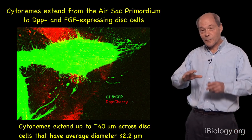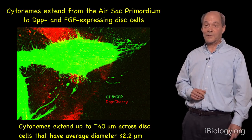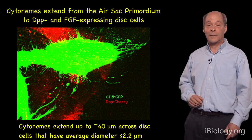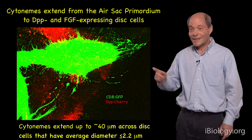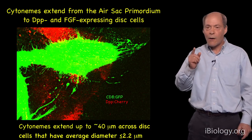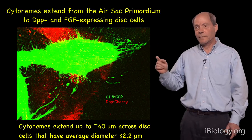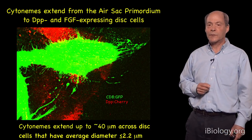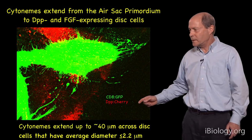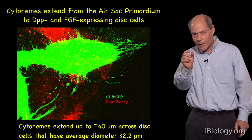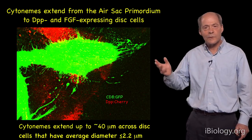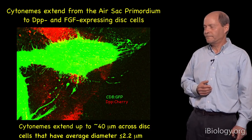If we overexpose the micrograph of the air sac primordium expressing CD8GFP, we see that the borders of the outside are not smooth but have filopodia extending in many directions. These filopodia are what we call cytonymes — a specialized type of filopodia involved in signal transduction — responsible for moving FGF and DPP from the wing disc to the air sac primordium cells. We can measure these cytonymes: they extend up to 40 microns across the disc, and disc cells have a diameter of only about 2.2 microns, so they extend across almost 15 to 20 cells at maximum.